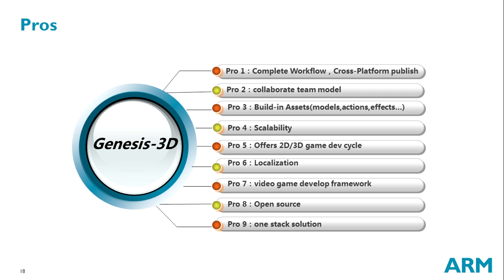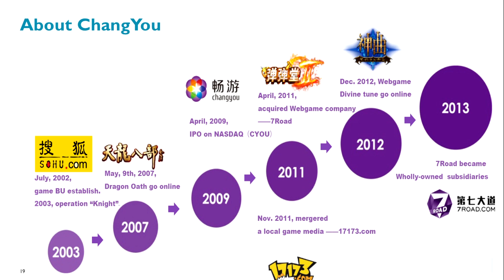Let me introduce my company. It's called Sohu Changyou. In July 2002, at the beginning, it was just a business unit in Sohu. In 2007, we made our first PC game called DragonOS, which was also published in the US market. In April 2009, we IPO'd on NASDAQ.